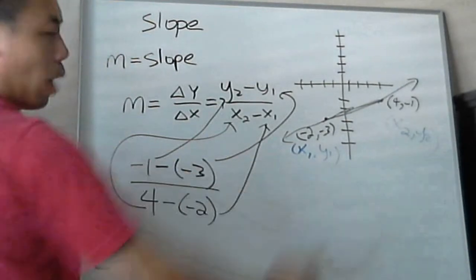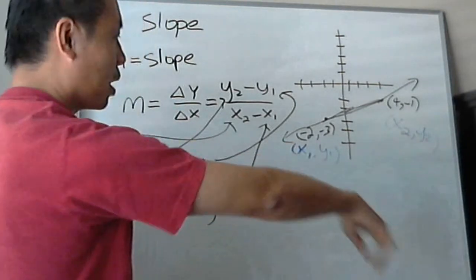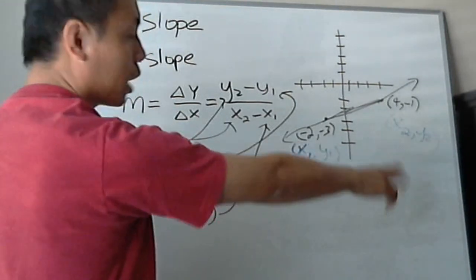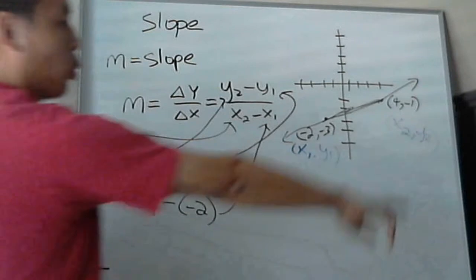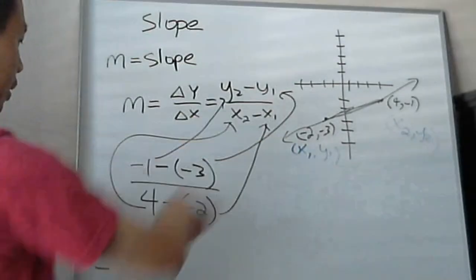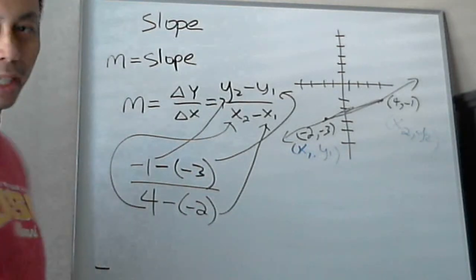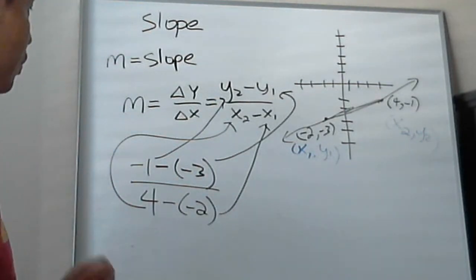So those are X1, Y1. This is X2, Y2. Technically you can change them, but if you start at X2, Y2, then you have to keep it the same. So as you can see all my arrows. A lot of times people get confused where I get these numbers from, where the variables come from.